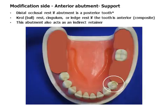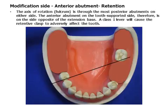The anterior abutment on the modification side requires special consideration because it is situated anterior to the fulcrum line. If it is a posterior tooth, an occlusal rest may be used. If it is an anterior tooth, a ball, ledge, or cingulum rest may be used. This abutment acts as the indirect retainer.